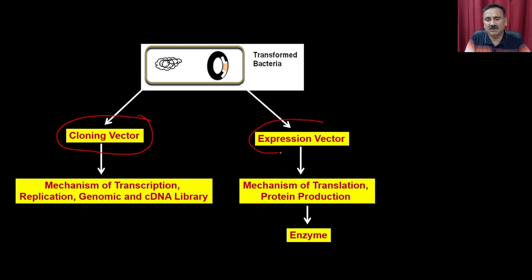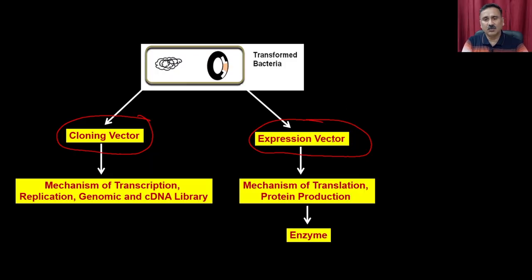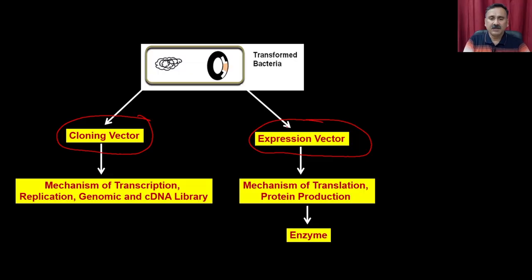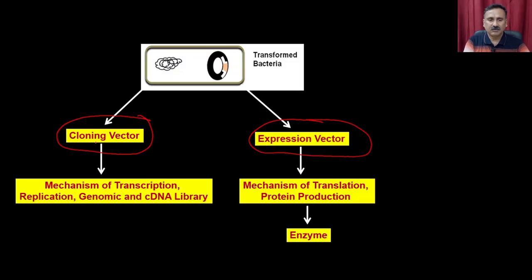In some cases when you know that the enzyme or protein you are expressing is toxic in nature, you do not do the cloning into an expression vector because then you are going to produce a protein that will eventually kill the cells. That is when you use a cloning vector. Apart from that, a cloning vector can also be used for studying the mechanism of transcription, replication, and the preparation of genomic and cDNA libraries. Whereas the expression vector is exclusively used for studying the mechanism of translation or for enzyme production.